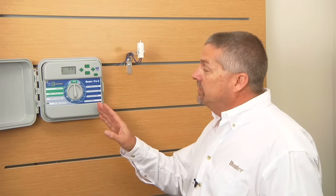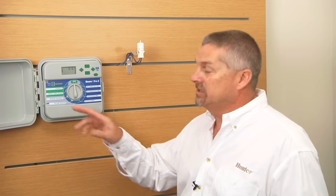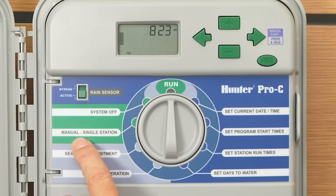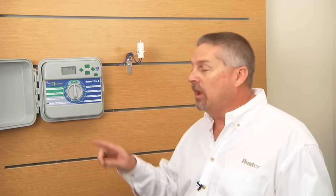Here's how to actually test the fact the sensor is working once it's already installed. On Hunter controllers, you have two ways to turn a zone on. You may have just installed the sensor and you're thinking, I want to test this thing and make sure it works. There's two ways to operate a station.